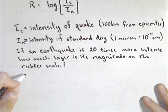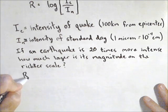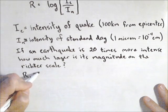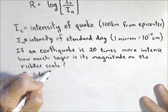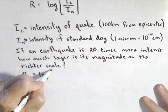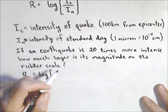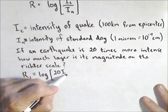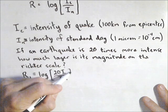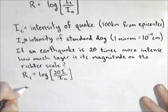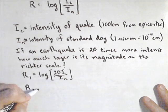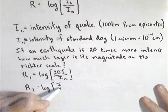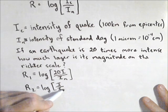Let's set up an equation for both of these. R_1, the more intense one, equals log of 20I over I_n, where I is the intensity of the smaller earthquake. The larger one has intensity 20I. Our smaller one will be R_2, which equals log of I over I_n.